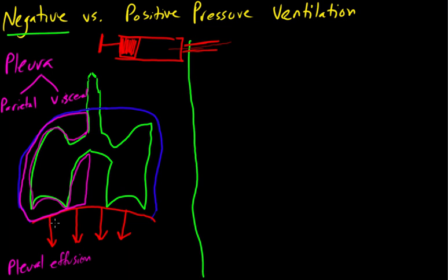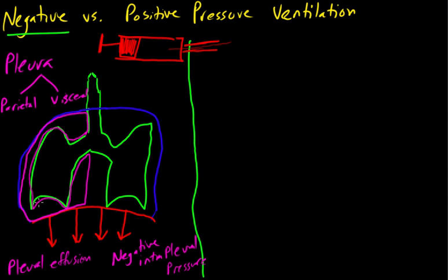Normally our pleura is touching. So when we move our diaphragm downwards, we're creating a negative intrapleural pressure. We have a negative pressure here, and since we have a negative pressure on the inside, it's going to pull our visceral pleura with it, so our lungs are going to expand. That is how we take a breath. When our diaphragm contracts, we're going to create a negative intrapleural pressure, which pulls on the lungs and creates an outward force, expanding our lungs.